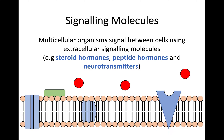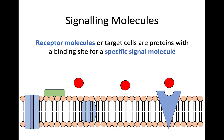Hopefully you remember something to do with neurotransmitters and maybe some other hormones from National 5. The idea behind this is similar to things we've discussed previously, where receptor molecules or target cells are proteins that have a binding site for a specific signal molecule. You can see in this diagram here, you have this triangular receptor molecule, and it's going to have that binding site for this specific signal molecule — that sort of jigsaw piece idea — so it's going to be specific for that one molecule.